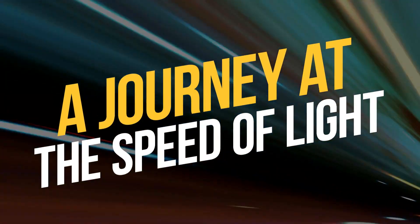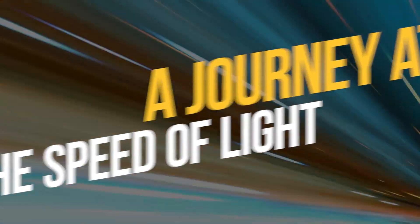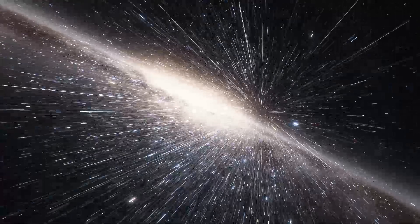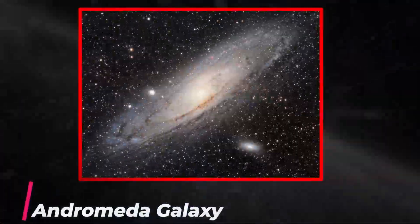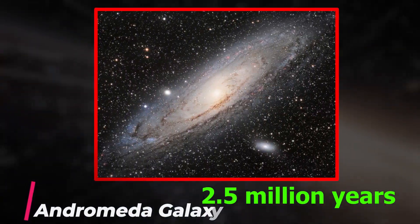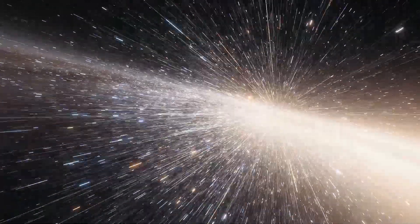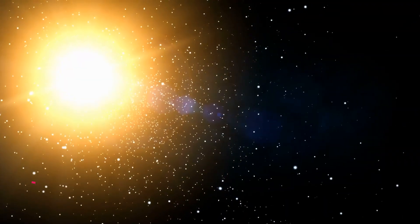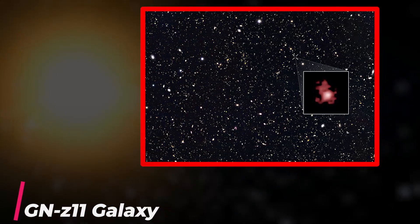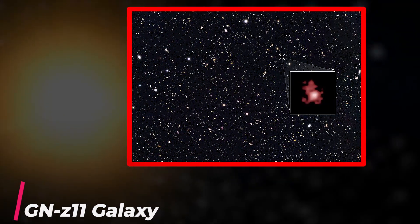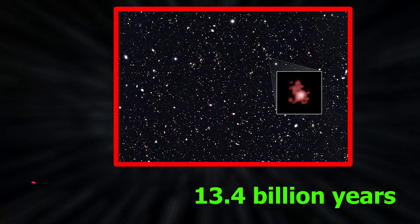A journey at the speed of light. Imagine taking a cosmic journey at the speed of light. As we explore further, we come across the Andromeda galaxy, but it would take a whopping 2.5 million years to reach it. And get this, the farthest known galaxy, GN-z11, would require a mind-blowing 13.4 billion years to approach.